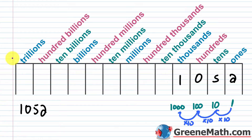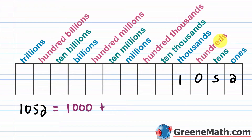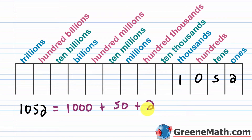Now that we understand the names and pattern, let's think about expanded notation using 1,052. The digit multiplied by its corresponding place value gives the expanded form. There's a 1 in the thousands place: 1 times 1,000 = 1,000. There's a 0 in the hundreds place — that 0 is a placeholder keeping the other digits in their correct positions; without it, you'd have 152, not 1,052. You have 5 tens: 5 times 10 = 50. And 2 ones: 2 times 1 = 2.